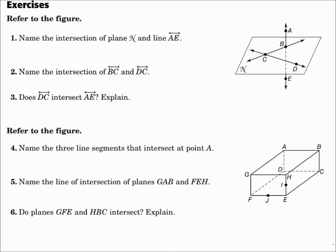Refer to the figure. Number one. Name the intersection of plane N and line AE. Well, plane N and line AE intersect right here at point B. It's like a pencil stabbing through a piece of paper. Remember, they intersect at point B.